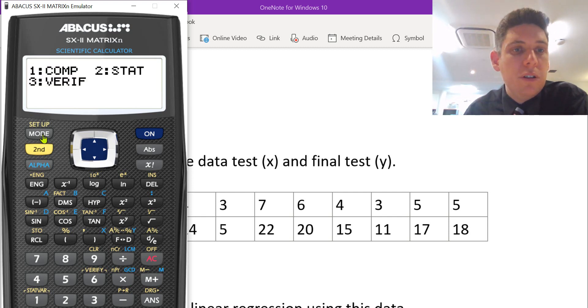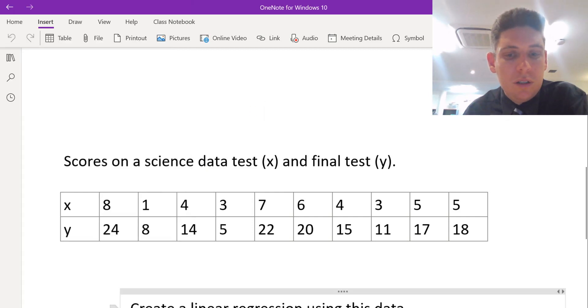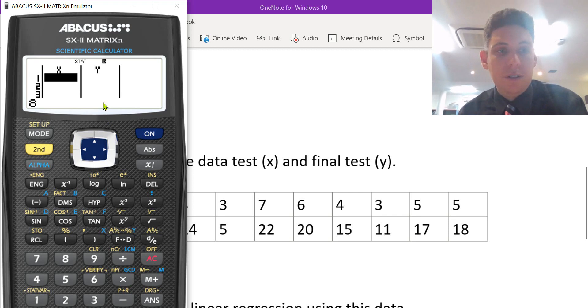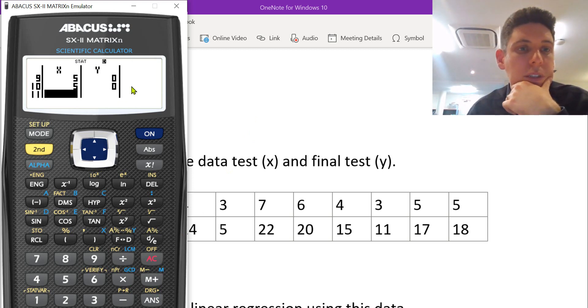So you go mode, go 2 for stats, and then go 2 again. And this is going to give us a linear equation. So type in all the values. So we've got 8, enter, 1, enter. All right, once we've done that, type in all your Y values and make sure they correspond to those Xs that you just typed in.